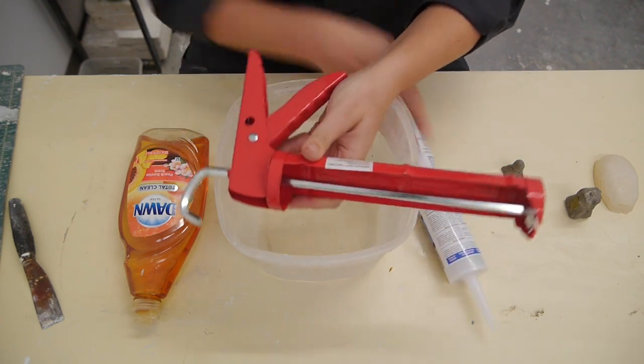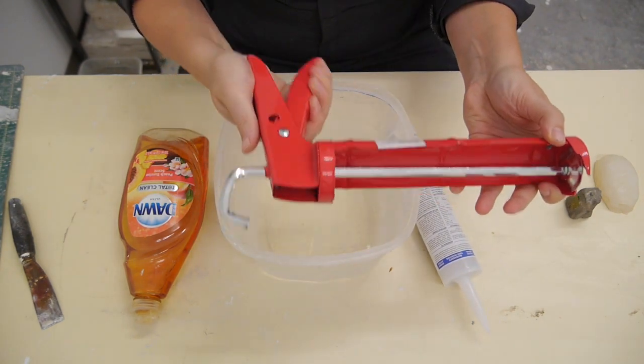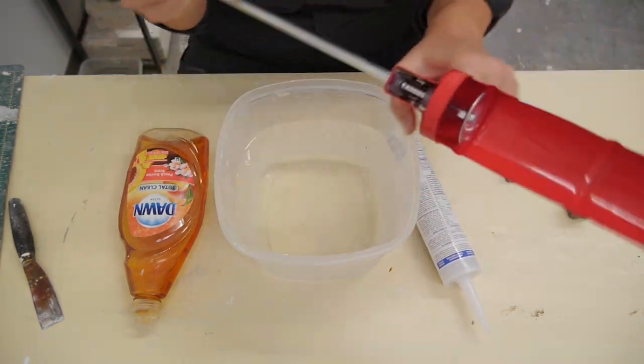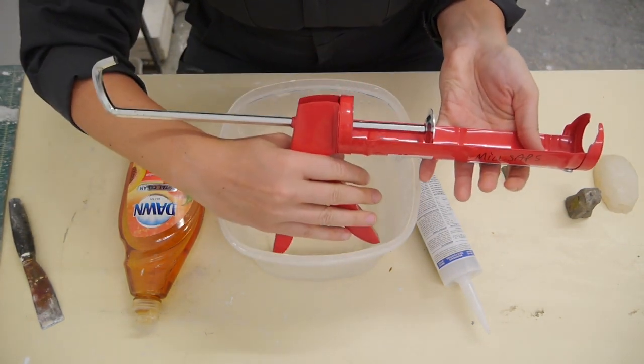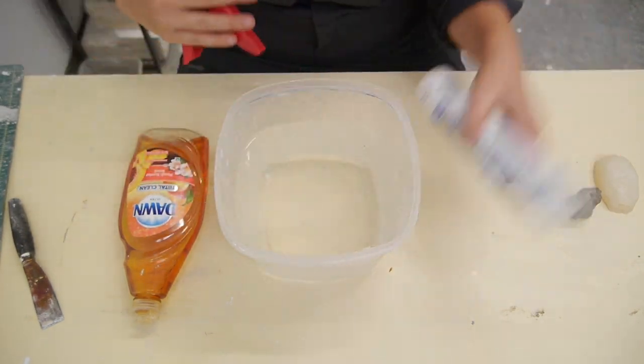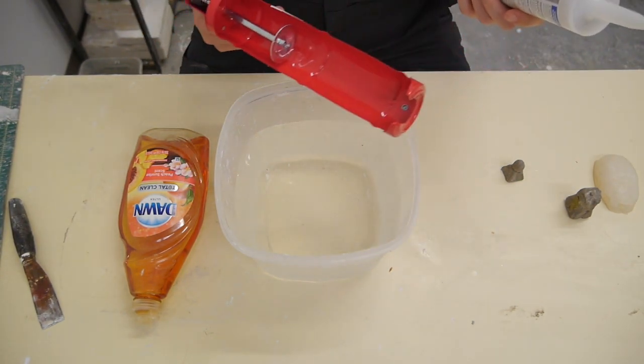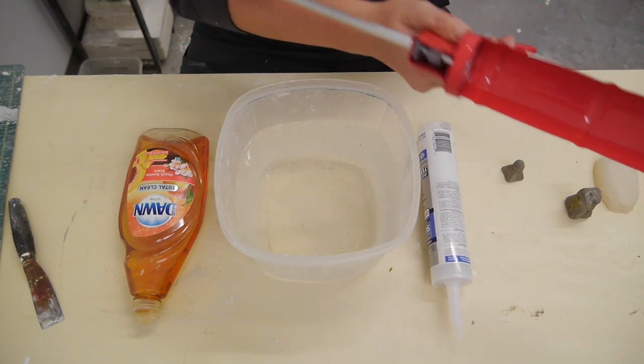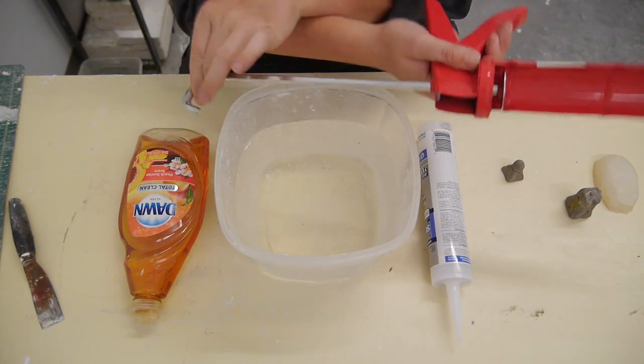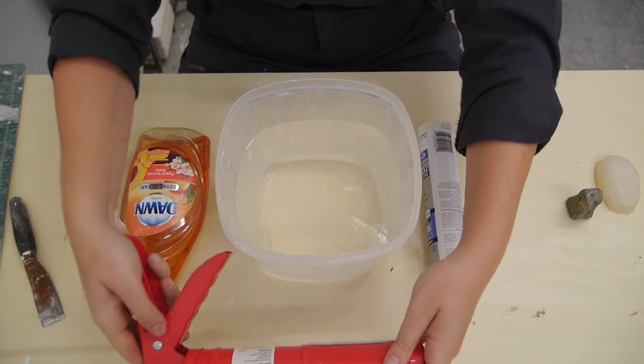This is a caulk gun. Here is a trigger. You click it here to apply pressure to your caulk, your tube of caulk. I'll talk a little bit more about this when I load the caulk into the caulk gun. You want to pull it back here to get it ready.